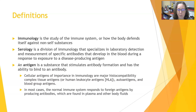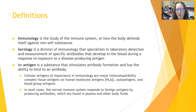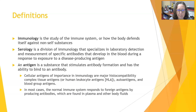Cellular antigens of importance in immunology are the major histocompatibility complex tissue antigens — your MHC antigens, also known as human leukocyte antigens or HLA antigens. Also your auto-antigens — this is what your immune system looks at to detect self versus non-self — and the blood group antigens, so the ABO/Rh and then all the other blood groups. In most cases the normal immune system will respond to foreign antigens by producing antibodies, which can be found in plasma and other body fluids that we can then test.